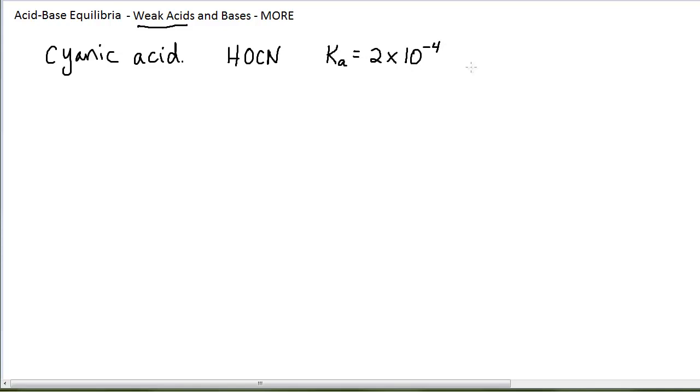My table also lists a pKa value, but we could also calculate pKa because it's the negative log of the Ka. I'm not going to use the pKa right now. Now, if I need to work an equilibrium problem with cyanic acid, the very first thing I'm going to need to do is write an equilibrium reaction for it. And the equilibrium reaction for a weak acid has exactly the same format every single time.